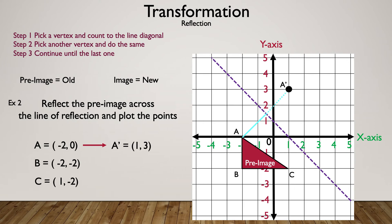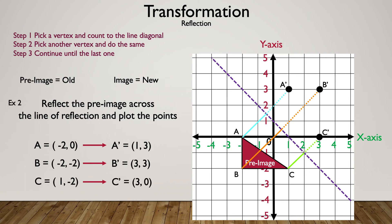Now for vertex B: we're at one diagonally, then two, then two and a half — we've reached the line. Counting away from the line: half, one and a half, two and a half. B prime is (3, 3). For vertex C, it's only one away from the diagonal line, so we count one away on the other side. C prime is (3, 0). Now connect the dots to complete the image.